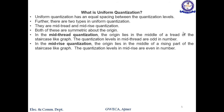Uniform quantization, as the name implies, has equal spacing between the quantization levels. It can be broadly categorized into two types: mid-tread and mid-rise quantization. Both of these are symmetrical about the origin. In mid-tread quantization, the origin lies in the middle of the tread of the staircase graph, and the quantization levels are in odd numbers. In mid-rise quantization, the origin lies in the middle of the rising part of the staircase graph, and the quantization levels are even numbers.